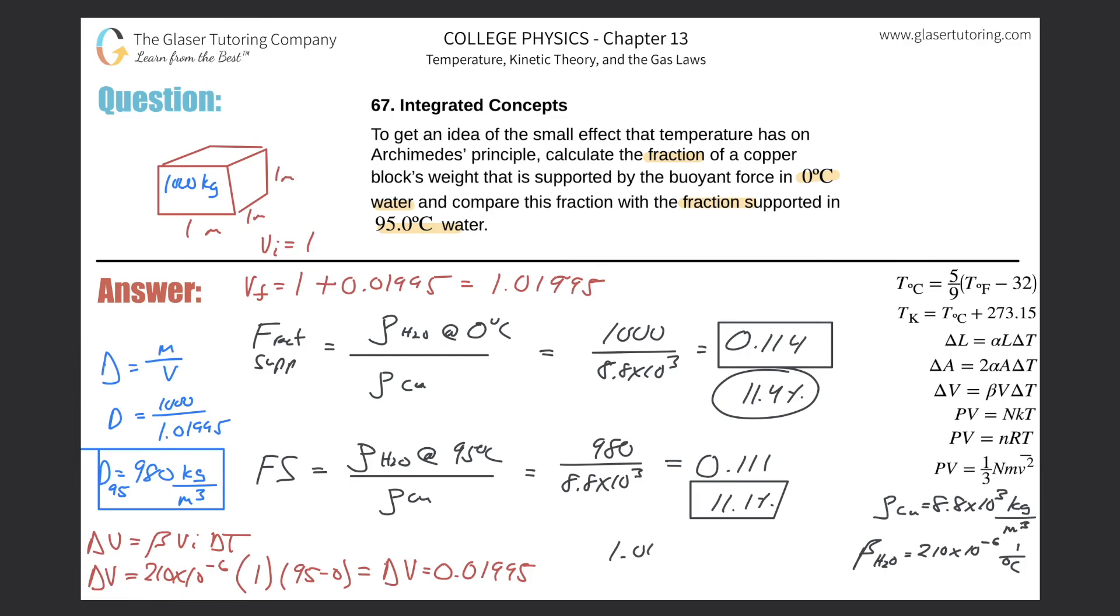So the actual fractional change between the two is 1.01995. When the density of water is zero degrees Celsius, it will support about a hundredth or two hundredths more than when the density of water is at 95 degrees Celsius. So basically insignificant. All right guys, thanks for tuning in, hopefully this helps. Please remember to subscribe and we'll see you next time. Take care.